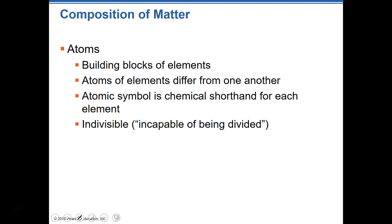What is matter made up of? If we go down to the smallest element of matter — thinking back to high school science — we're talking about atoms. Atoms are the building blocks of the elements. These atoms make up what those elements are, and atoms of different elements differ from each other. Not all atoms are the same unless they're of the same element. Each element has an atomic symbol, which is chemical shorthand for that element.